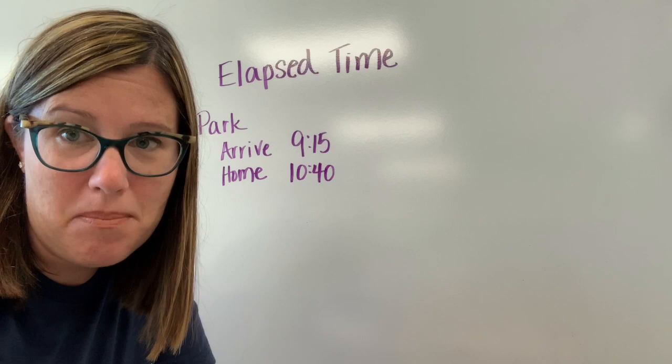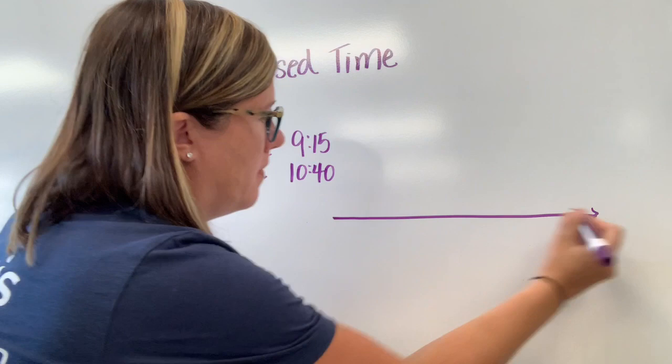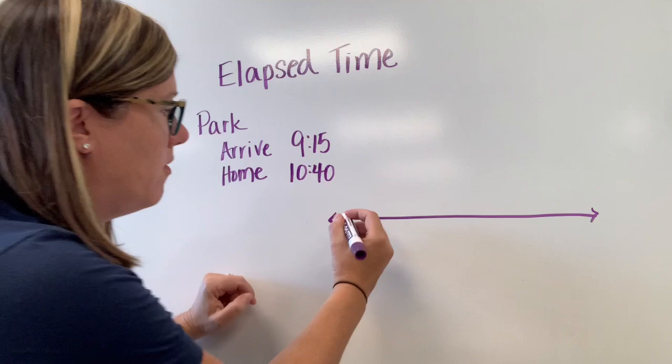How much time did you spend at the park? We can use mountains, hills, and bumps to help us with this. I would start by drawing a number line and then start with the time. I'm going to start with 9:15 here.